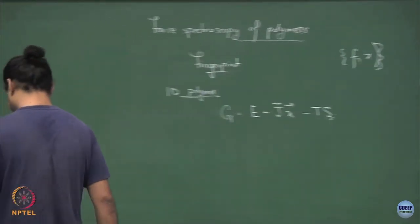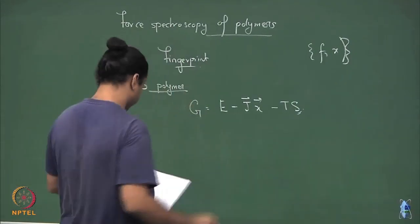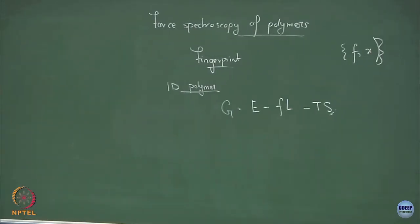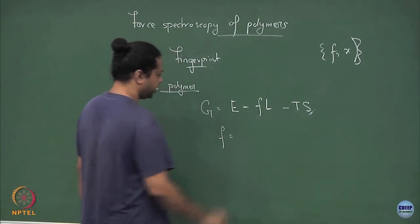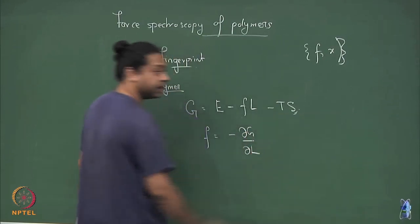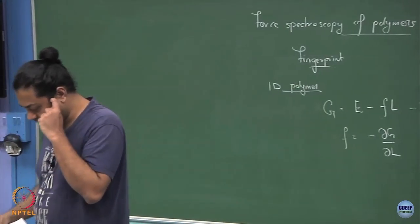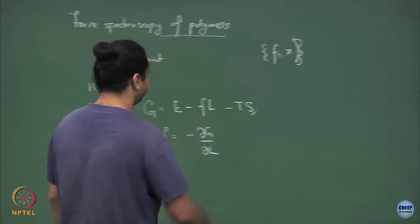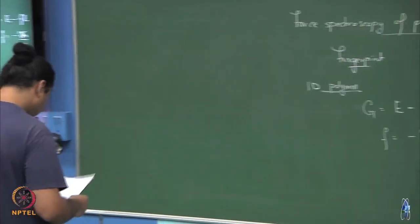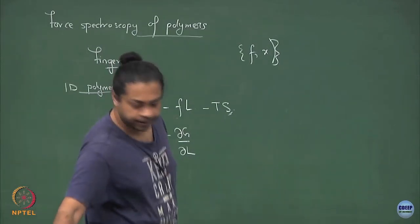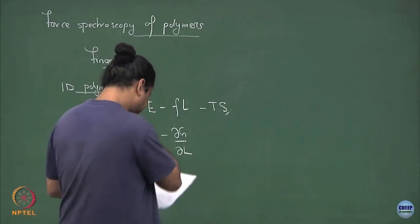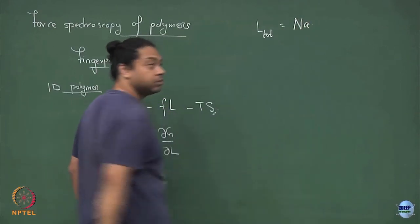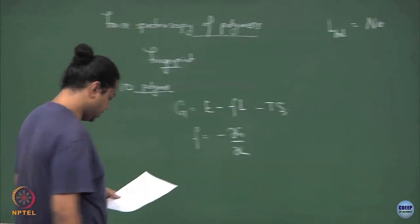As I pull this polymer more and more, the entropy decreases because the polymer has very little configurational entropy available. If I pull it completely it has nothing to do except be in a straight line; if I don't pull it at all, it has a lot of entropy among the available microstates. So let me write F and L as the appropriate variables, and the force is given by minus dG/dL — just like pressure is dG/dV.